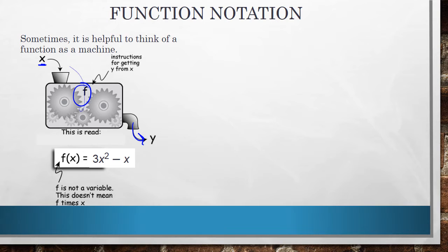Now I want to just make sure that we review function notation because this is a concept that students sometimes mess up. When you see f of x, this is read as f of x, and this does not mean f times x. This f is just a name. So this is telling us we're going to go to the function named f, we're going to be inputting in an x value, and what it's going to do to that x value is it's going to square it, multiply it by 3, and then subtract that x value from there.